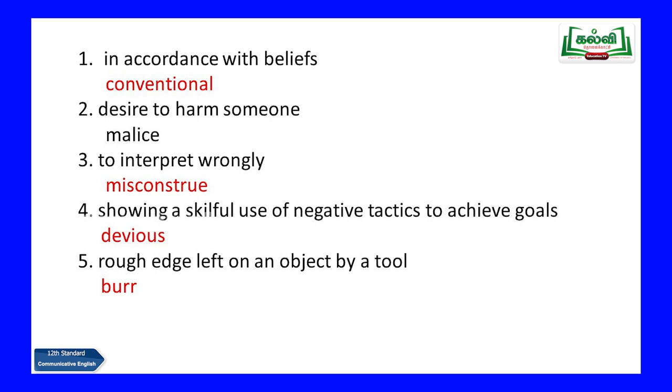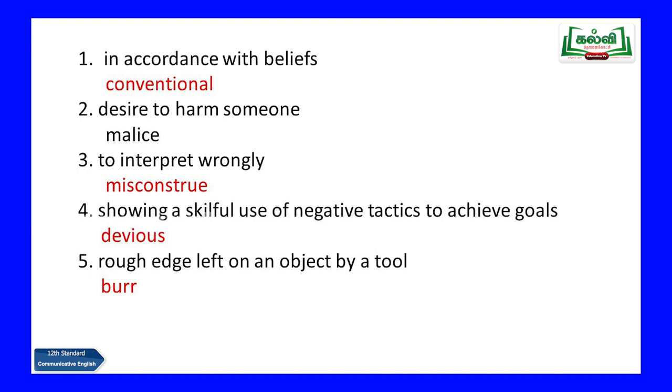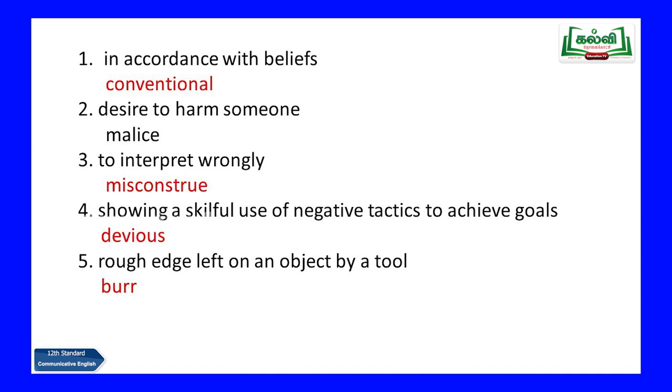'To interpret wrongly' — that is 'misconstrues.' When I understand somebody's actions in a wrong manner, I have misconstrued them. Next, 'showing a skillful use of negative tactics to achieve goals' — by hook or crook, using bad techniques, things that are morally wrong in order to achieve your goal. That is 'devious' — doing wrong things in order to get something done.